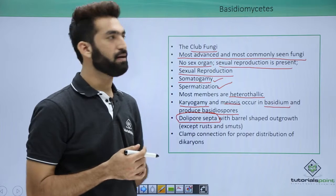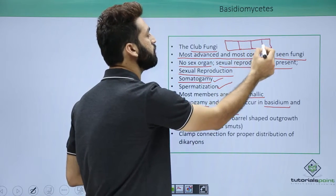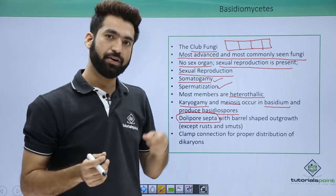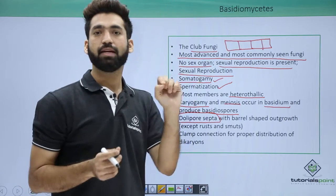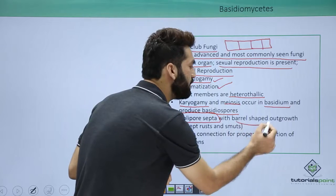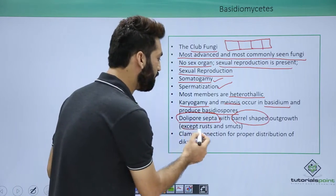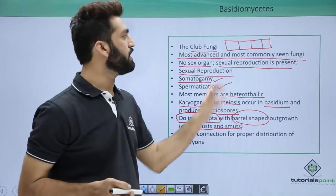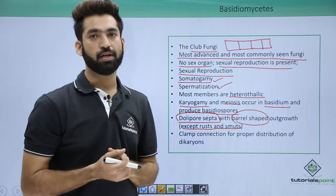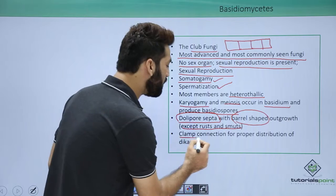Basidiomycetes have dolipore septa — a very important feature. The septa between hyphae are not continuous; they have pores. While Ascomycetes have simple pores, in Basidiomycetes these pores are barrel-shaped and are called dolipore septa. However, rust and smut — which are members of Basidiomycetes — do not show dolipore septa. All other Basidiomycetes members do.